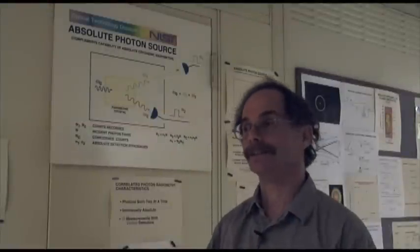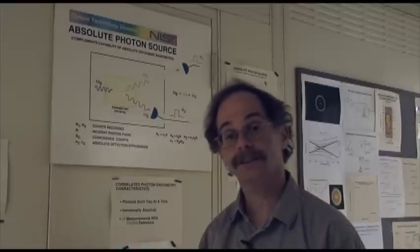Parametric down conversion is a process that's very important to us. The reason is it's a very special light source. It creates light two photons at a time.